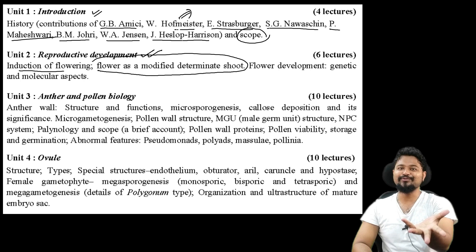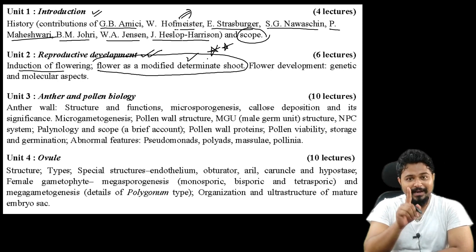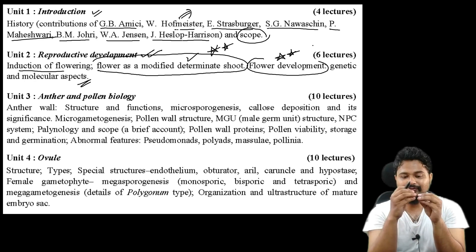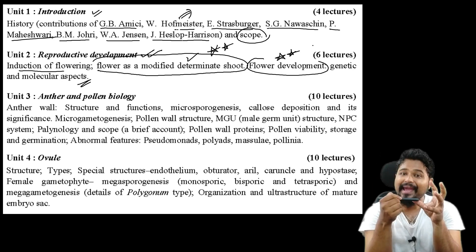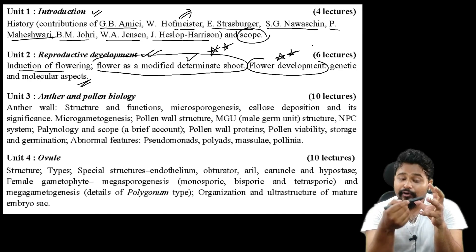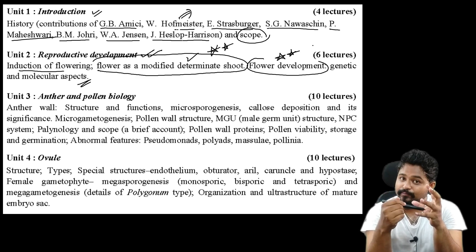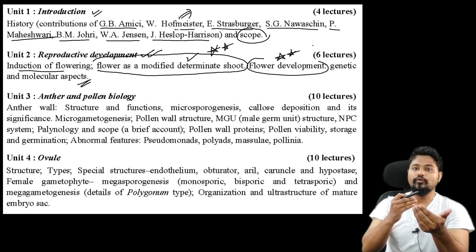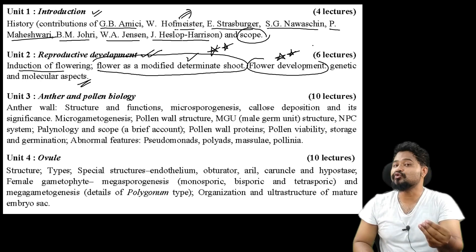This is very important: flower development - genetic and molecular aspects. Why is it important? Because understanding how flowers develop at the genetic level is critical. What genes are active, what proteins are available, what hormones are involved - these are the genetic and molecular aspects of flowering. Genes and molecular changes drive flower development.